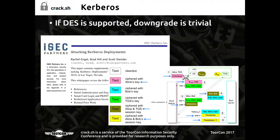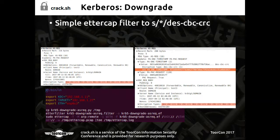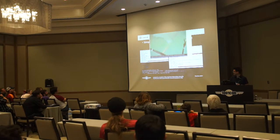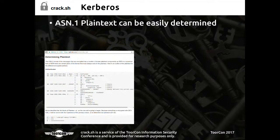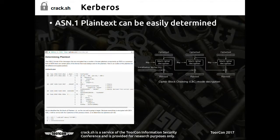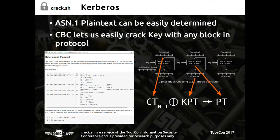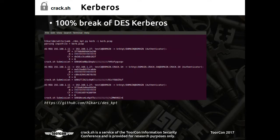With Kerberos it's really trivial to downgrade. A lot of legacy networks that still support it can easily be downgraded using a simple Ettercap filter — it's on our GitHub. In the encryption types field you just substitute any encryption type with DES-CBC-CRC and that causes everything to downgrade. You can use Wireshark to capture this. Kerberos is all based on ASN.1, so there's lots of known plaintext just in the ASN.1 encoding, which we can automatically extract to create a token to submit to the website.